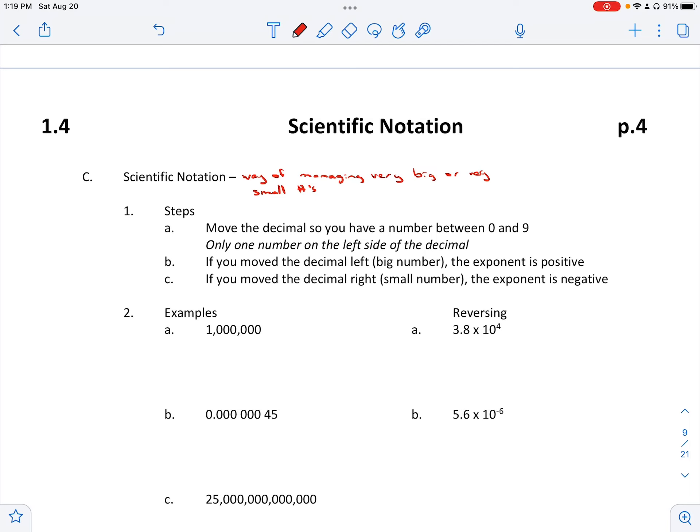Okay so here's our steps. Pretty simple. We're going to move the decimal so we have only one number on the left side of the decimal. Only one number between one and nine. If you move the decimal left, it was a big number, so the exponent is going to be positive. If we move the decimal right, our exponent is going to be negative.